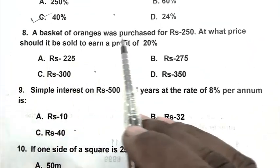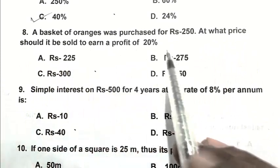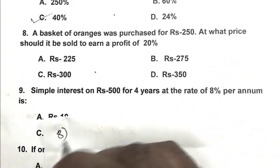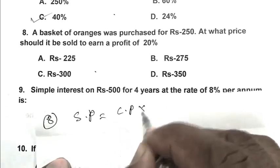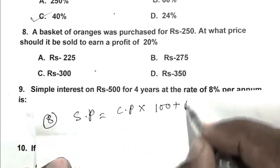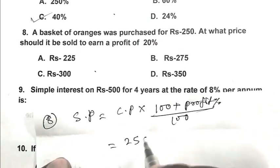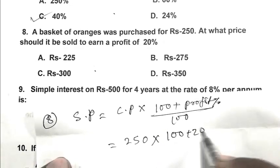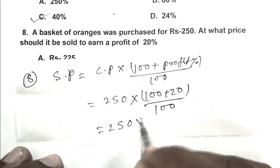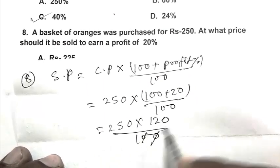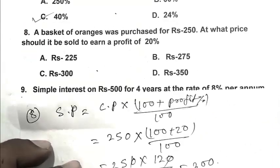Question number 8: A basket of oranges was purchased for Rs 250. At what price should it be sold to earn a profit of 20%? We can calculate it from formula. Selling price, that is cost price multiplied by 100 plus profit percentage by 100. So CP 250 multiplied by 120 by 100. So it becomes 250 multiplied by 120 by 100. So it becomes 300. So selling price of the orange is Rs 300. So C is the right answer.